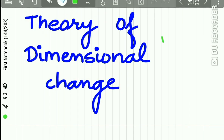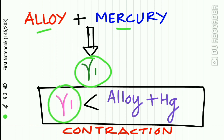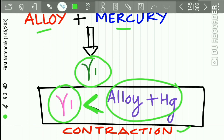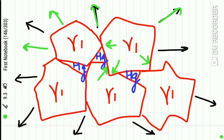Now let us study the theory of dimensional change. When alloy is mixed with mercury, gamma 1 matrix is formed. The final volume of this gamma 1 matrix is less than the volume of the alloy and mercury used for trituration. This difference in volume results in contraction of the final product. This contraction continues until the growth of gamma 1 crystals. As gamma 1 crystals grow, they impinge with one another, causing an outward pressure.